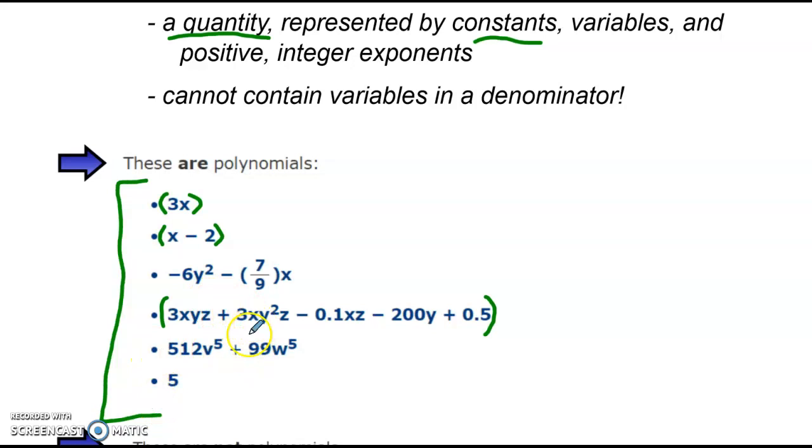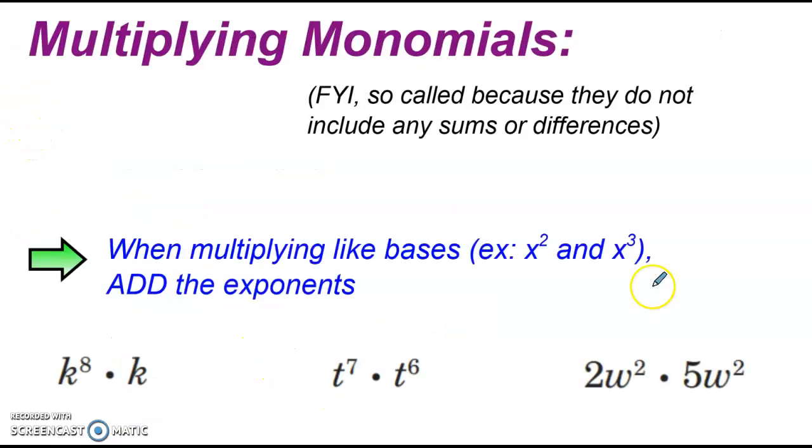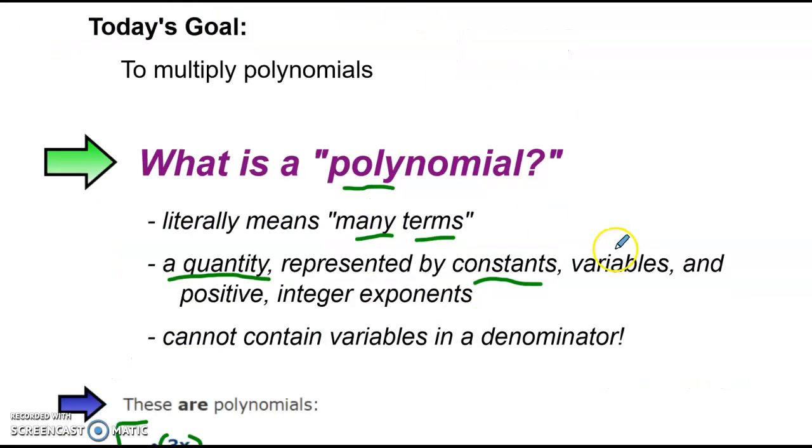We're going to do lots of different operations with them. For today, we're just going to focus on multiplication. We'll take this one step at a time. We're going to focus on a specific type of polynomial called a monomial. Now we have the prefix mono. So-called because they do not include any sums or differences.